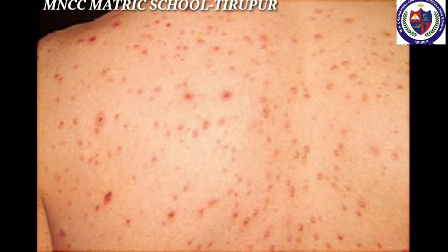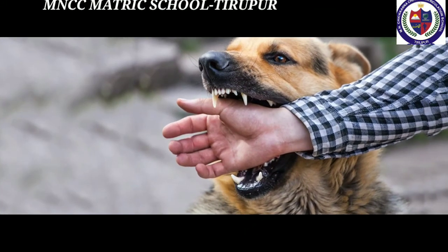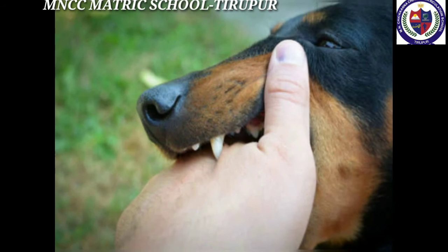Prevention and treatment: the chicken pox vaccine is the best way to prevent chicken pox. Next one is rabies. Rabies is a fatal disease which is transmitted by the bite of an infected dog, rabbit, monkey, cat, etc. The virus present in the saliva of the animal enters the brain via neurons.